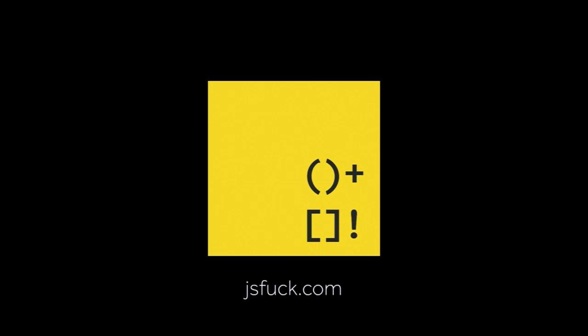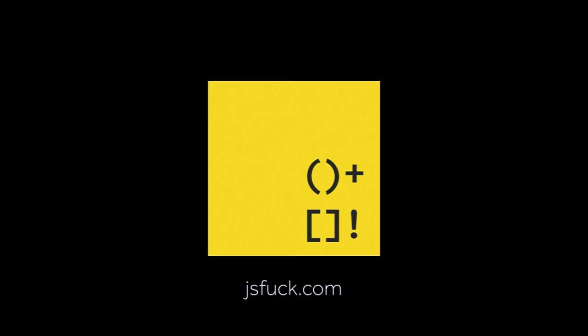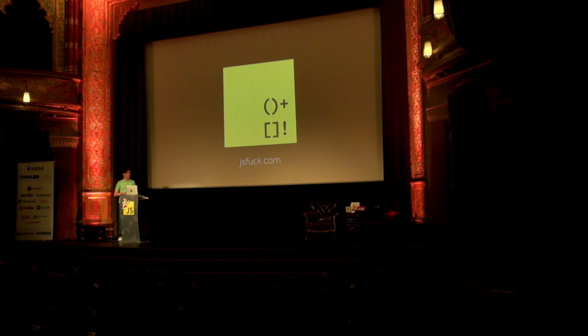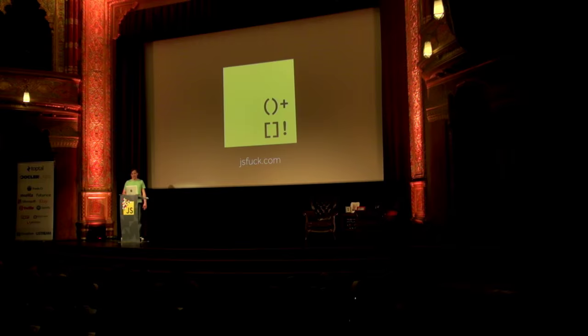Another thing I focused on was the opposite question: how many different characters do we need to write JavaScript? It turns out you only need parentheses, plus signs, square brackets, and ampersand. I set up jsfuck.com, where you can put in any JavaScript you like — for example, alert one — and it will encode the data into this sequence of characters. You can take this sequence and copy it somewhere, and it will run without a transpiler. It's valid JavaScript that will execute. It's quite a lot of characters, but only six different characters.